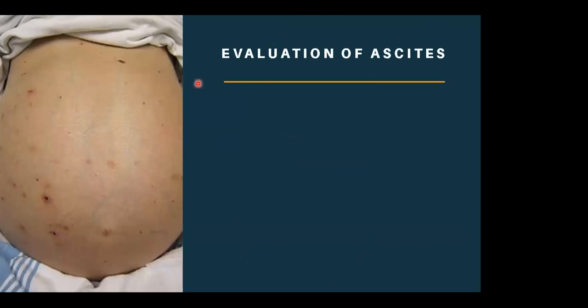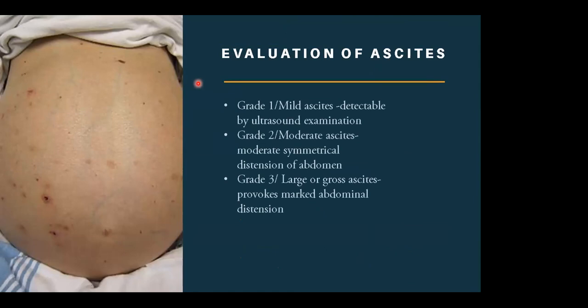We are going to evaluate patients with ascites. We grade ascites in terms of clinical presentations. Grade one is mild ascites, only detectable by ultrasound examination. Grade two is moderate ascites, with moderate symmetrical distention of the abdomen. Grade three is large or gross ascites that provokes marked abdominal distention, often leading to patient discomfort and sometimes splinting of the diaphragm.